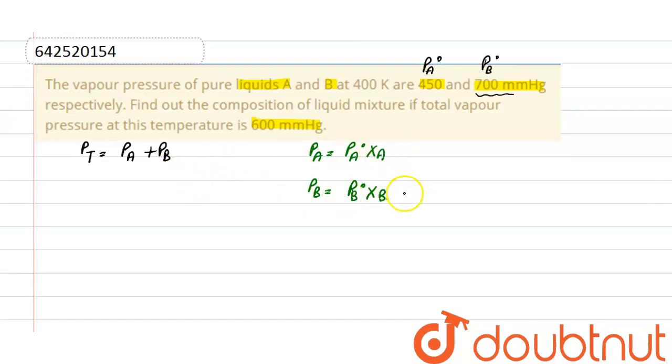And we can also write it as Pb node into 1 minus Xa, because Xa plus Xb is equal to 1, and Xb is equal to 1 minus Xa.